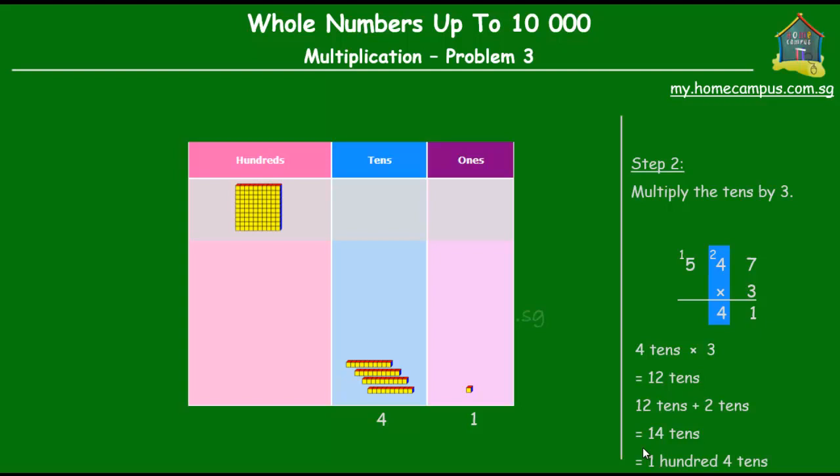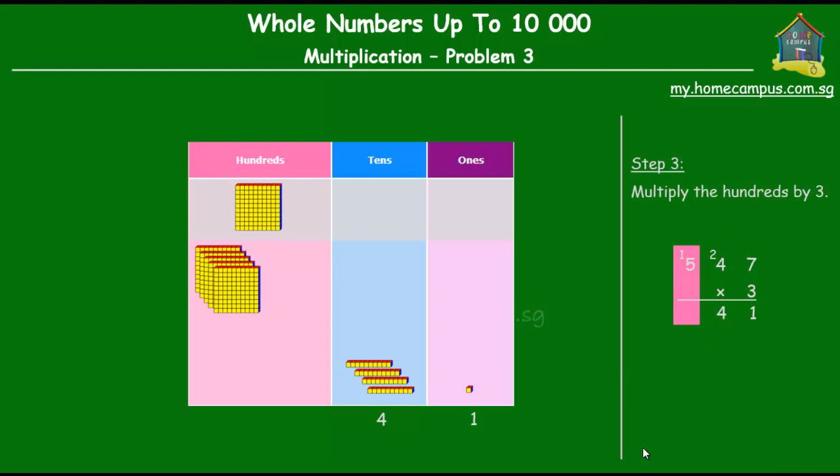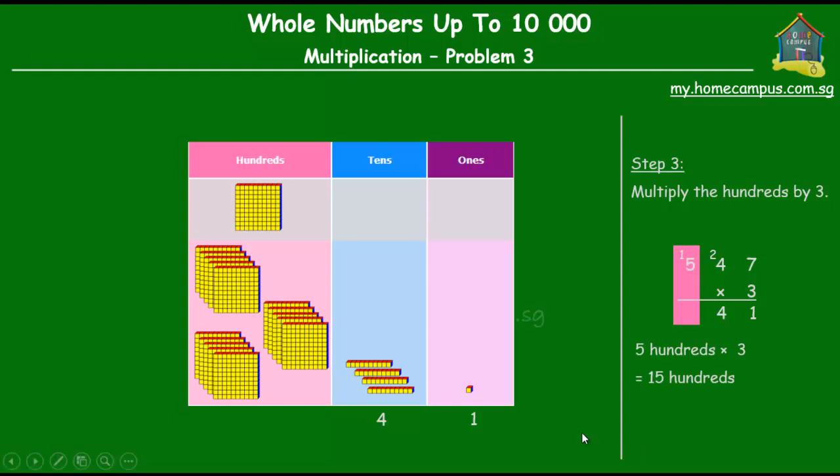That's the second step. The third step is to multiply the hundreds by 3. We have 5 hundreds. We multiply that by 3 and we get 3 sets of 5 hundreds. That's all together 15 hundreds. Now, 15 hundreds is what we get from multiplication and we know that we have 1 extra hundred here that we carried over when we regroup the tens in the previous step. So what do we have all together? All together we have 15 plus 1 and that's equal to 16. So we have 16 hundreds.